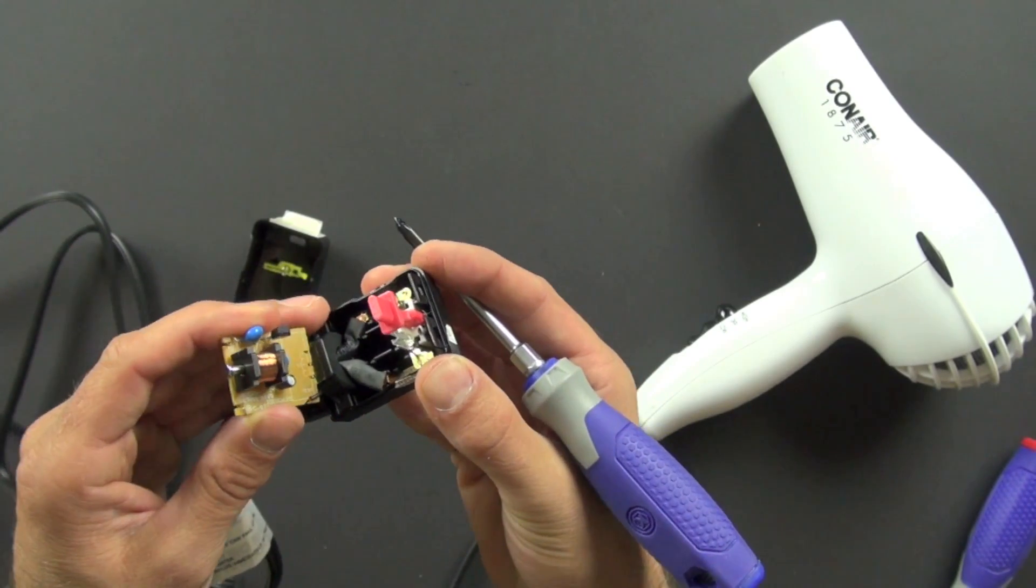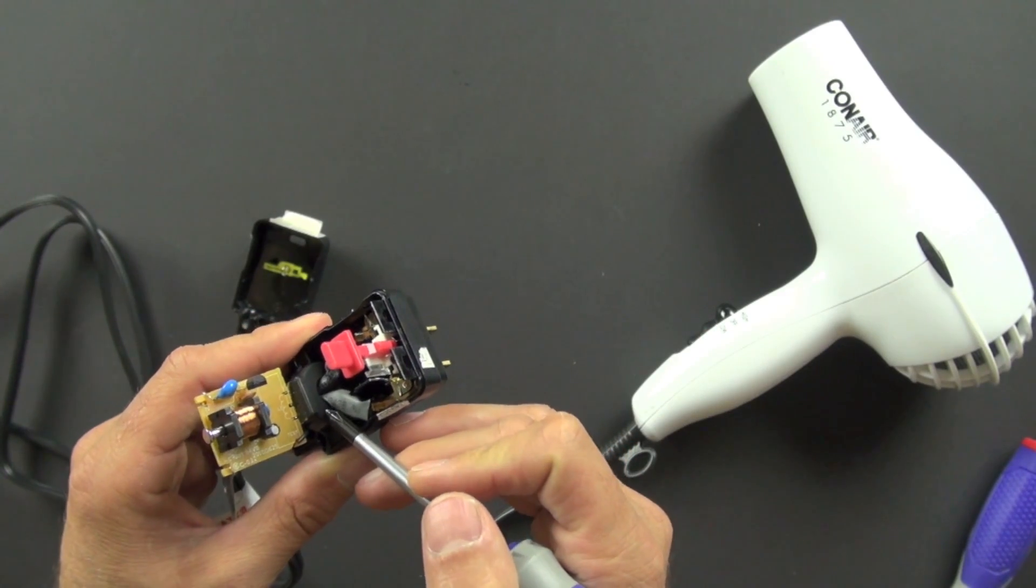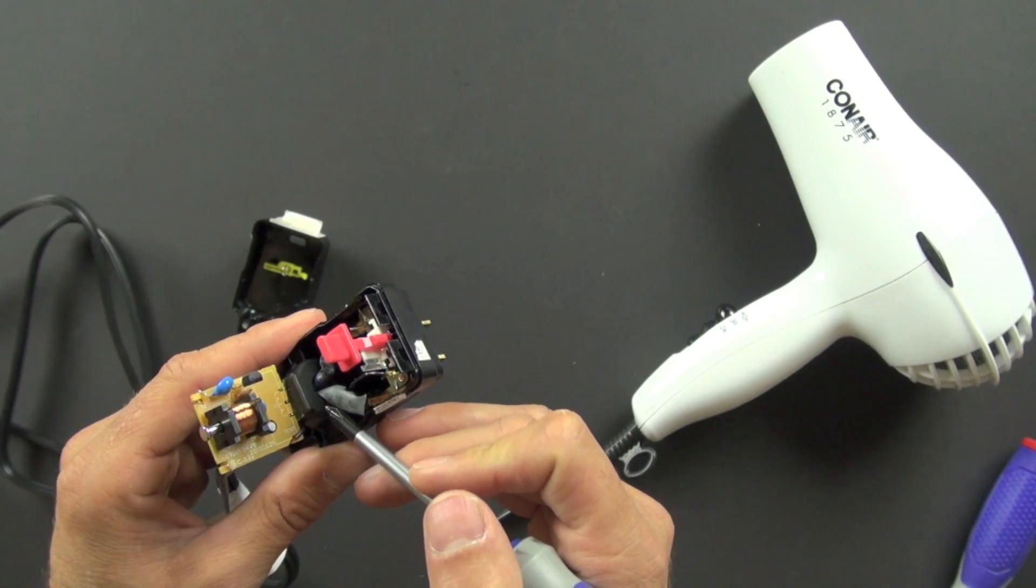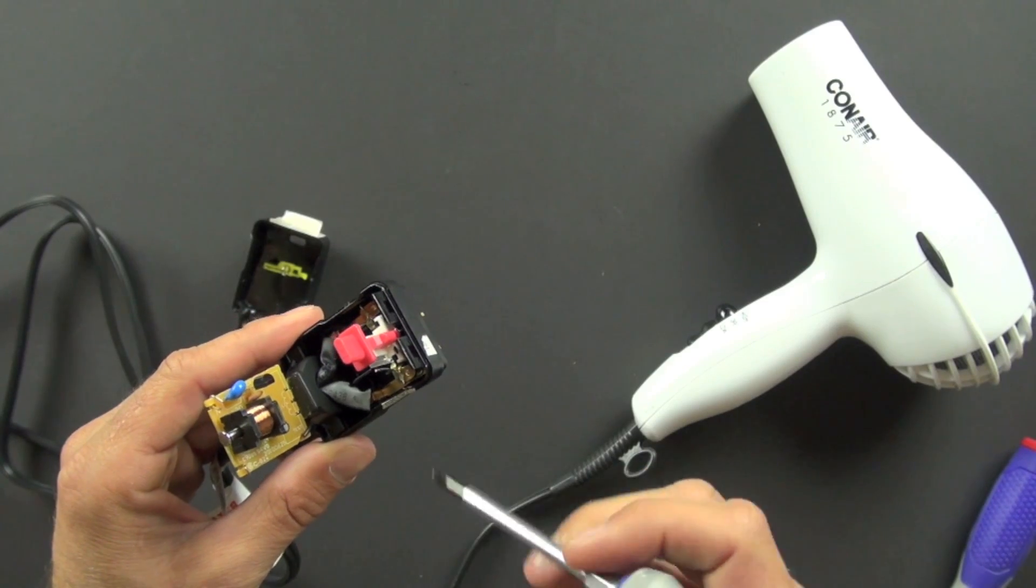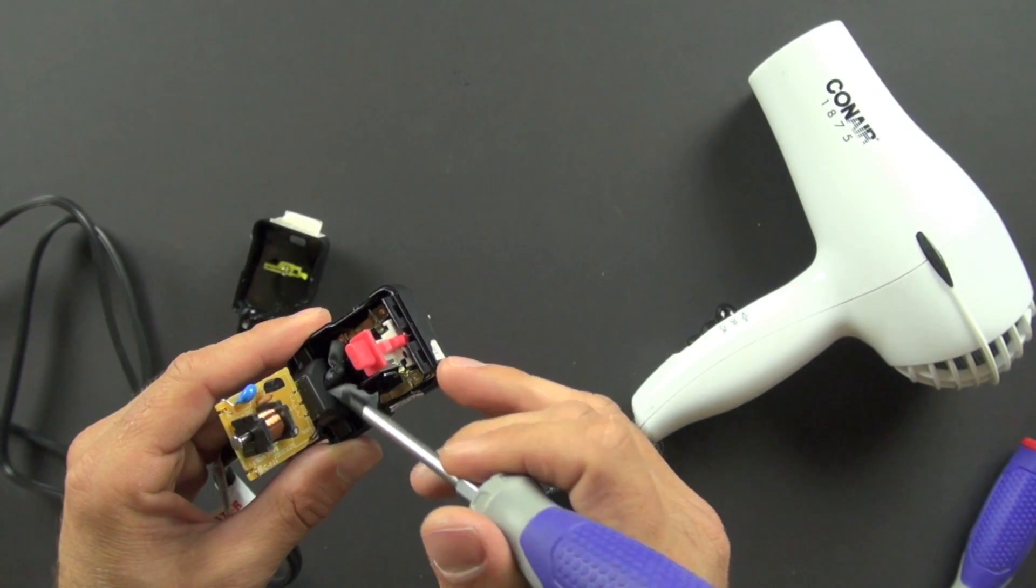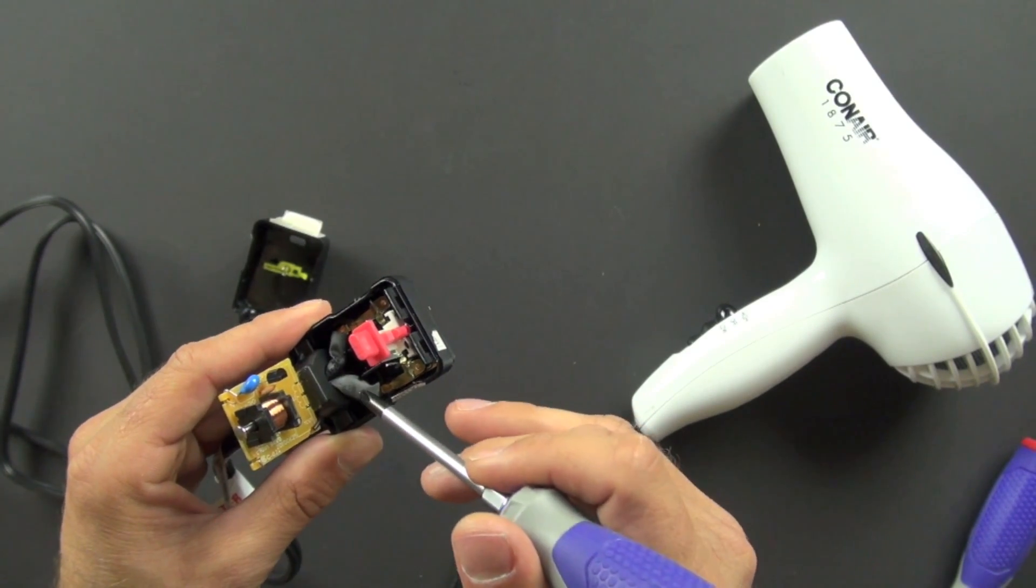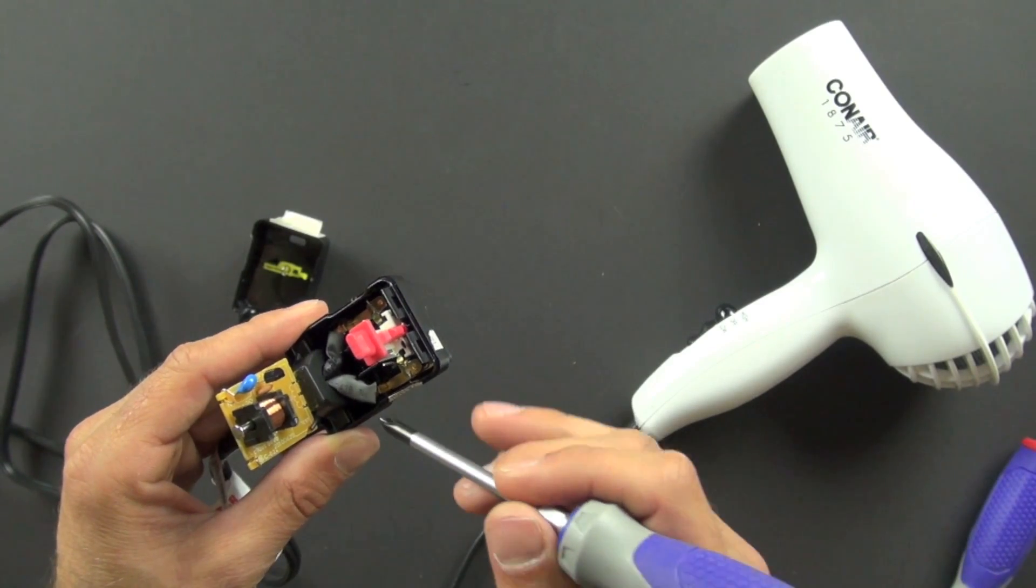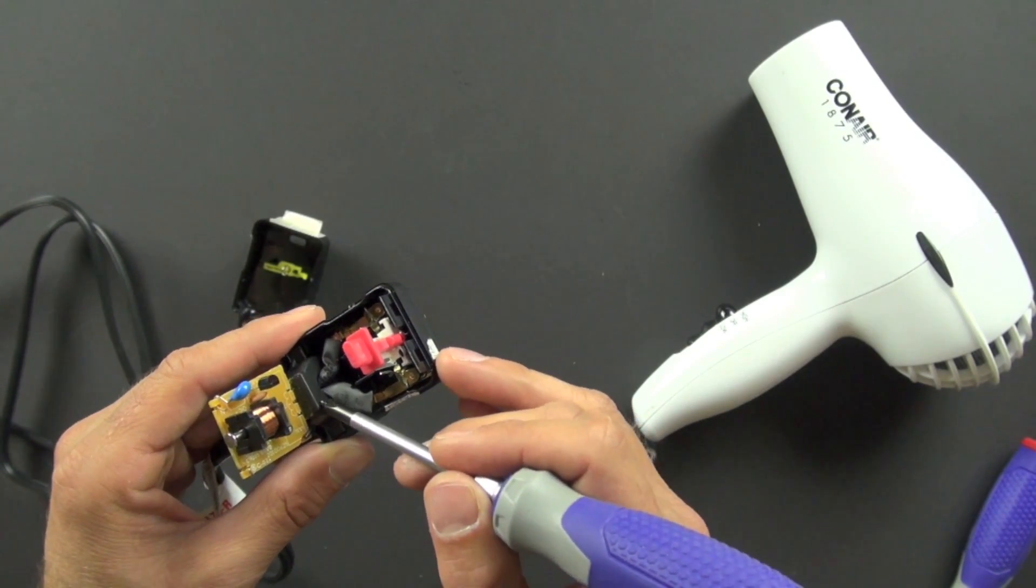So this thing right here is called a toroidal ring, or a copper coil, and it basically can sense the difference between these two lines. And so when there's a significant voltage difference, a few milliamps even,